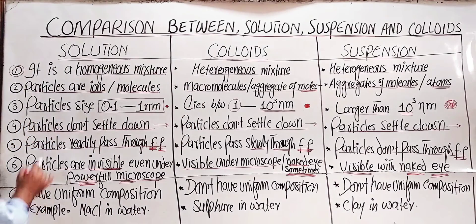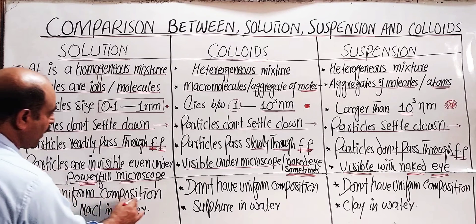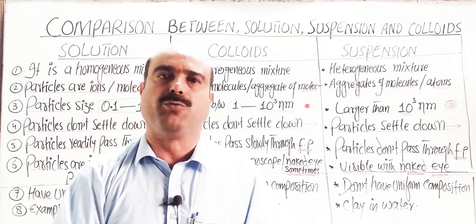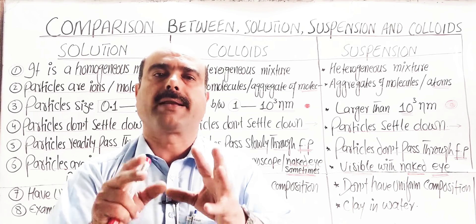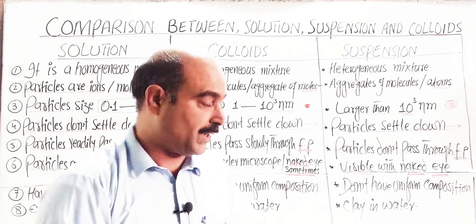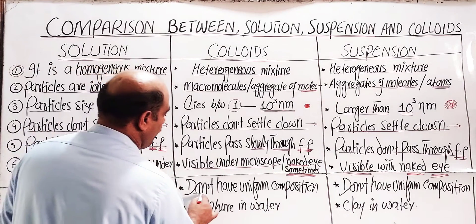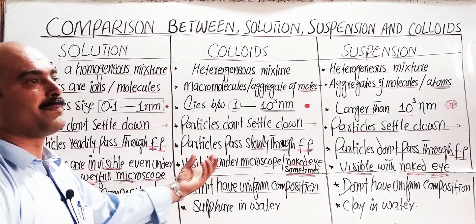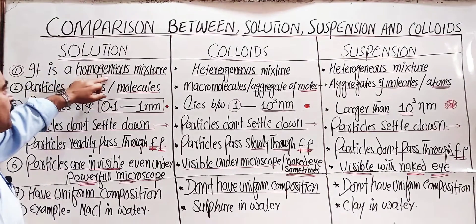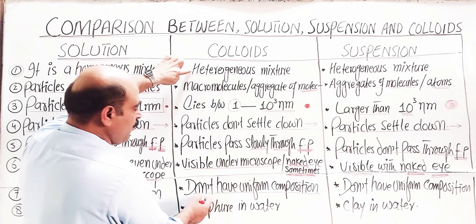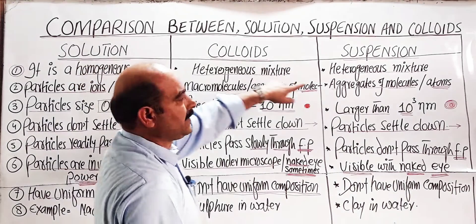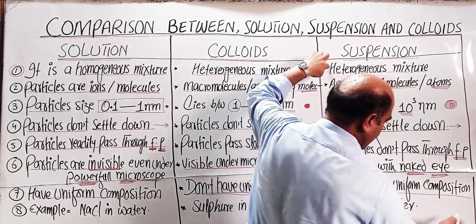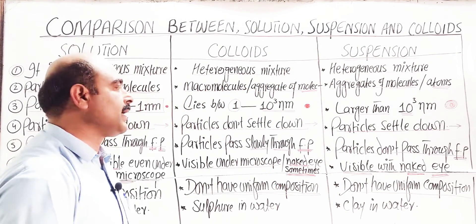Point number seven: in solution, the solution has uniform composition throughout its mass — the composition is the same throughout the bulk volume. In colloids, the particles do not have uniform composition. In suspension, the particles also do not have uniform composition throughout its volume — uniform composition is only a property of solutions.